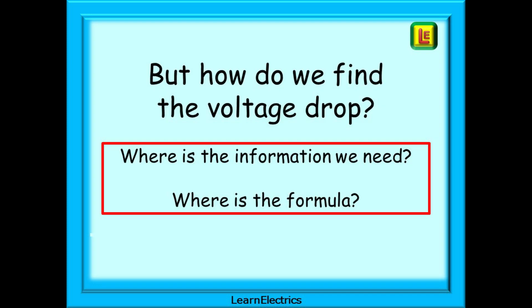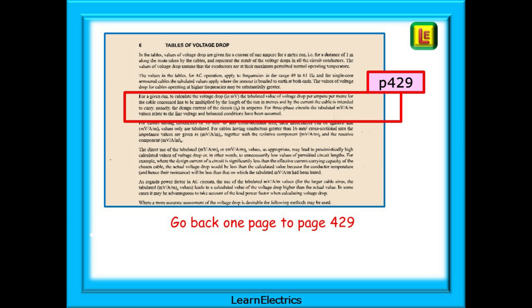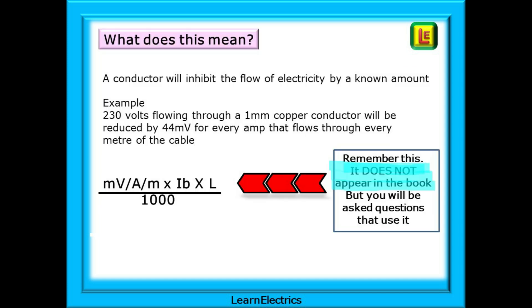But how do we find the voltage drop? Where is the information that we need? And where is the formula? For that, go back one page to the beginning of section 6 on page 429. There's some good information here and we want to look at the third paragraph. We're told that for a given run of cable we can calculate the voltage drop in millivolts by multiplying the voltage drop given in the tables by the length of the circuit and by the design current or IB. What does this mean?